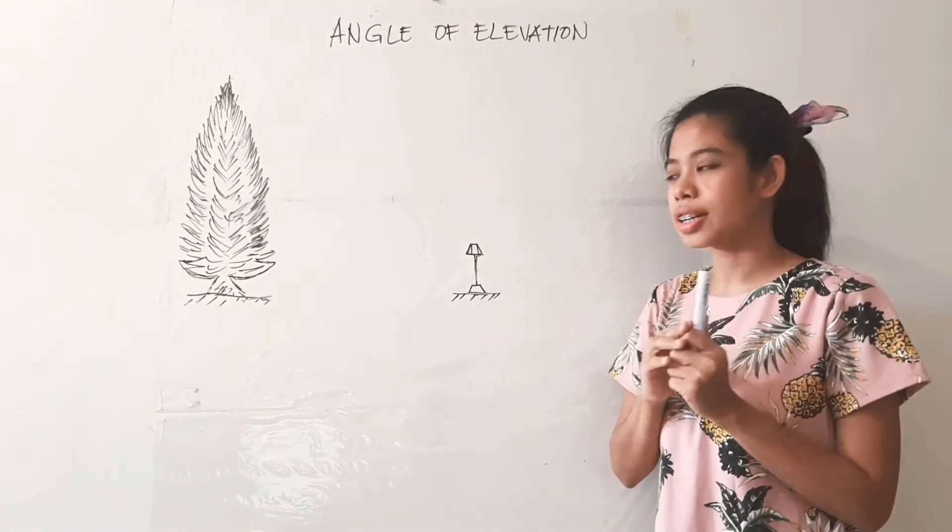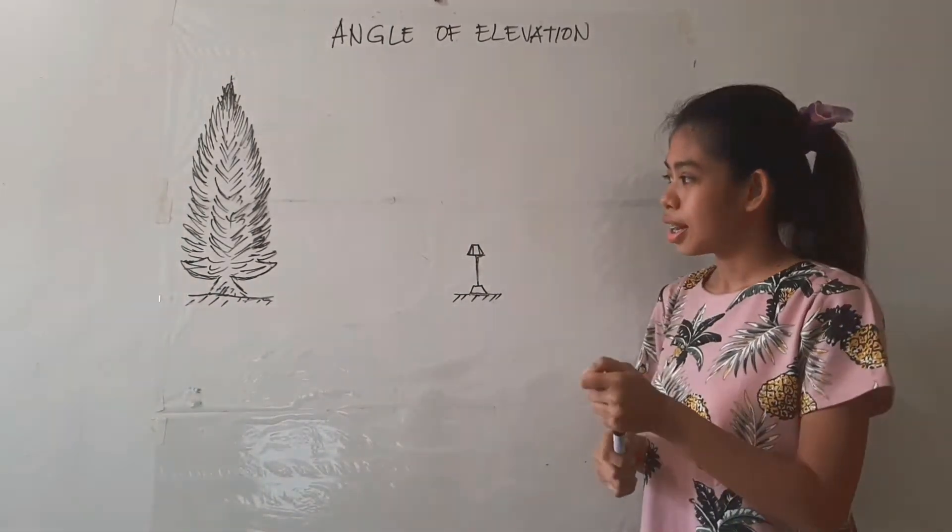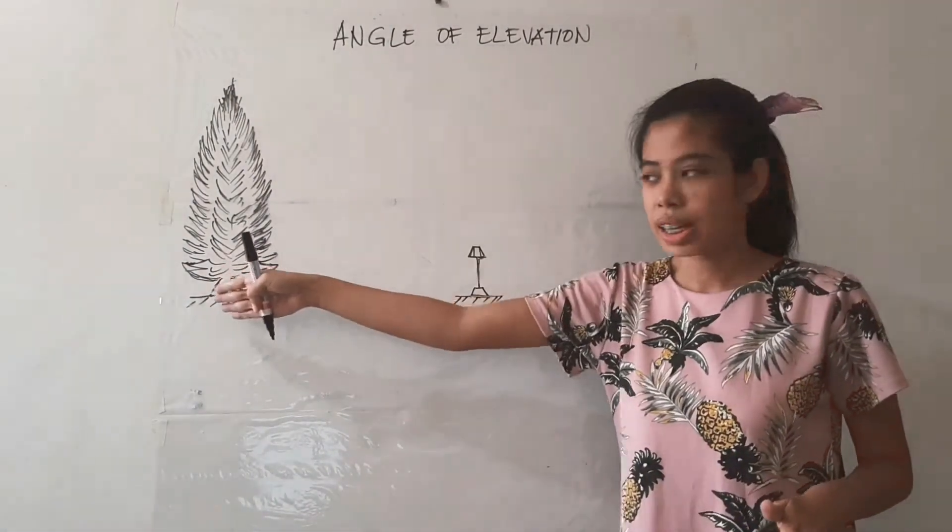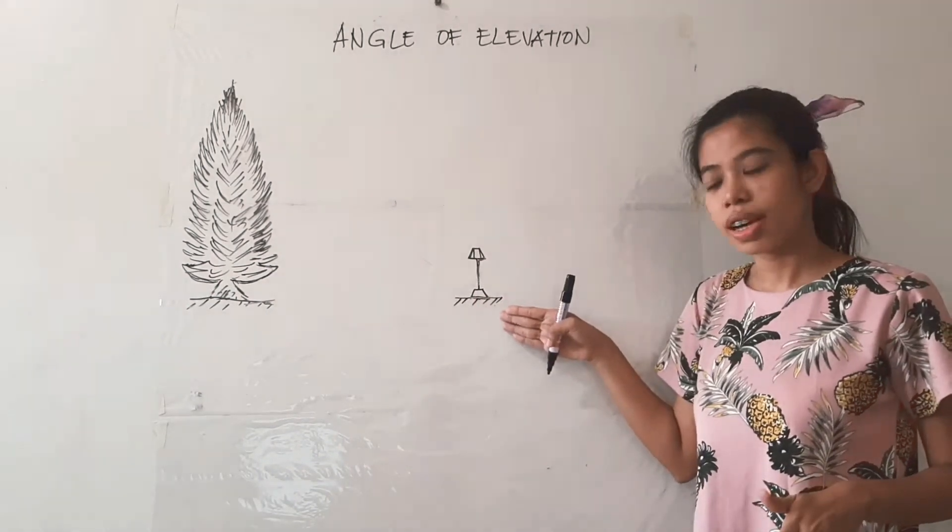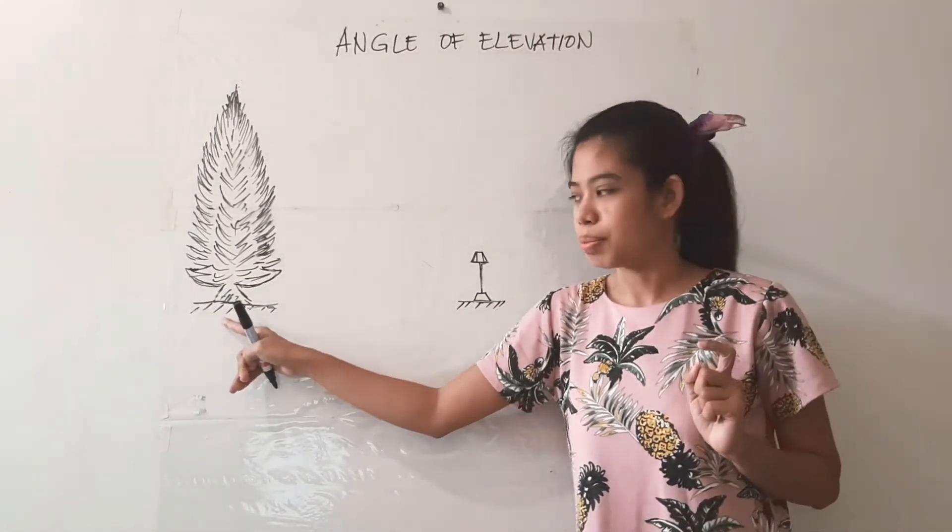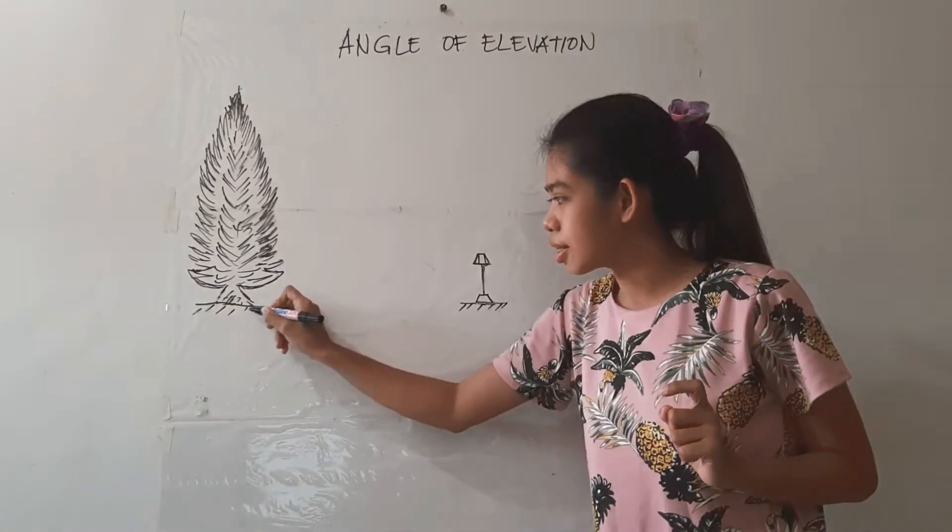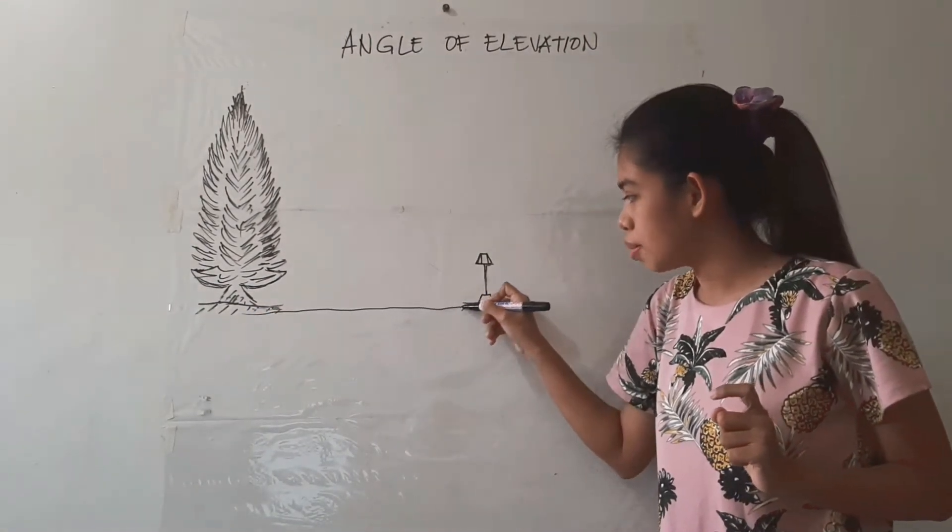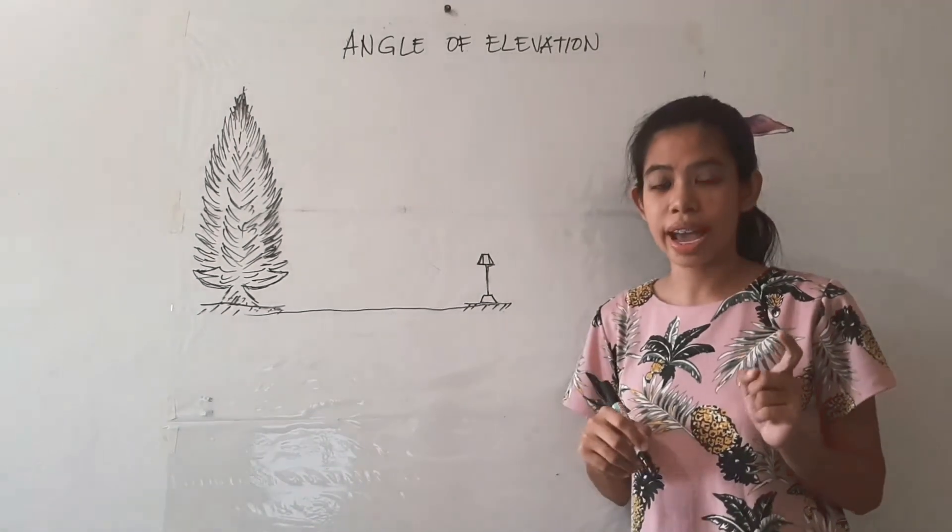So for you to better understand, suppose this is an illustration of a tree. This is the lamppost. This is the base of the lamppost, base of the tree. So this distance from the base of the tree to the base of the lamppost is what we call the horizontal line.